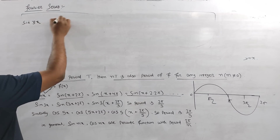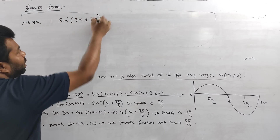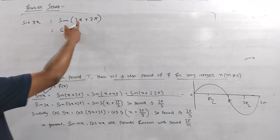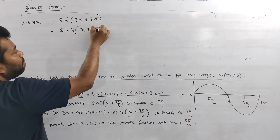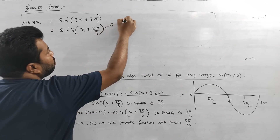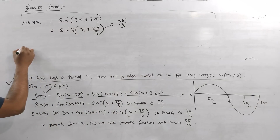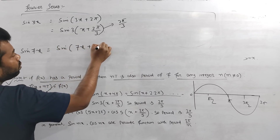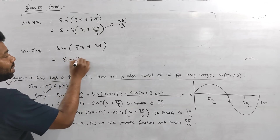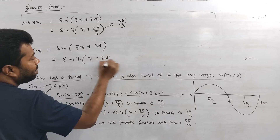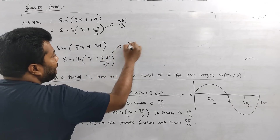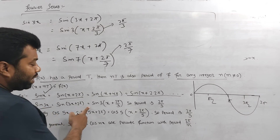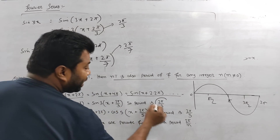For sin(3x): write sin(3x + 2π), take 3 as common to get sin(3(x + 2π/3)). So the period is 2π/3. Similarly for sin(7x): sin(7x + 2π) = sin(7(x + 2π/7)), so the period is 2π/7.